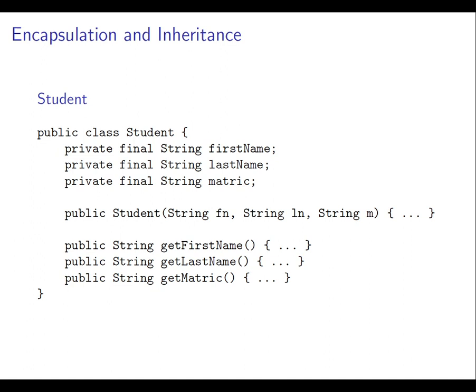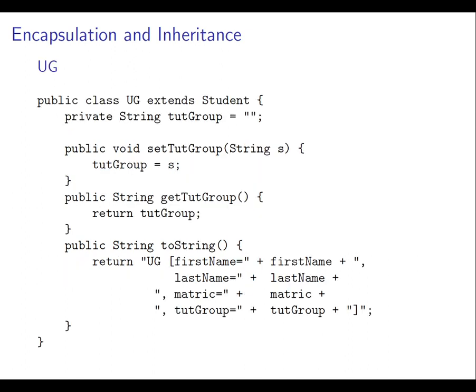Let's have another look at our student implementation. We've got three private attributes: first name, last name, and matric. We've got a constructor and three public getters to access those private attributes. If we try to implement a UG class extending student, and add a new private attribute tutor group, initialising it to the empty string, then we can have a new method that sets it, a new method that gets it, and we can override the toString method like that, and print out all of that information.